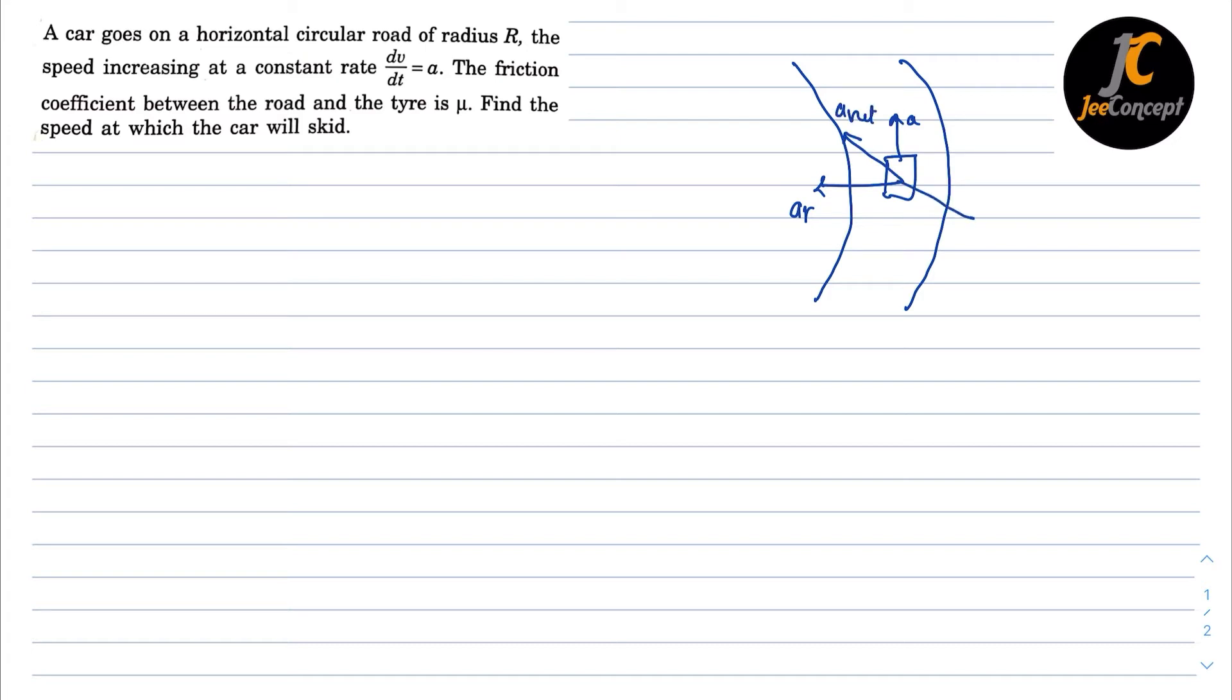So that means the friction which is required for this movement is in this direction which is equal to m times a_net and this required friction should be provided by the frictional force between the tire and the road.